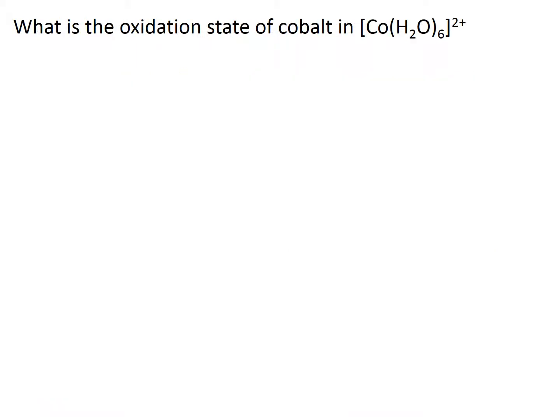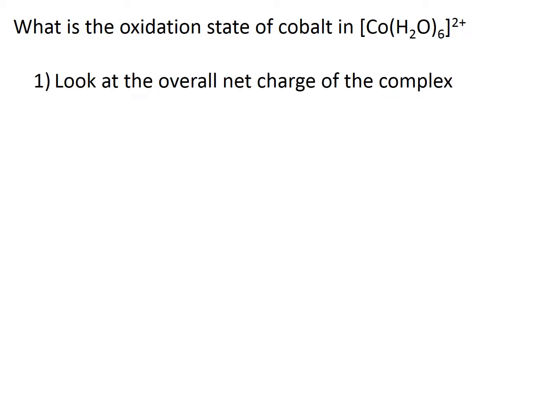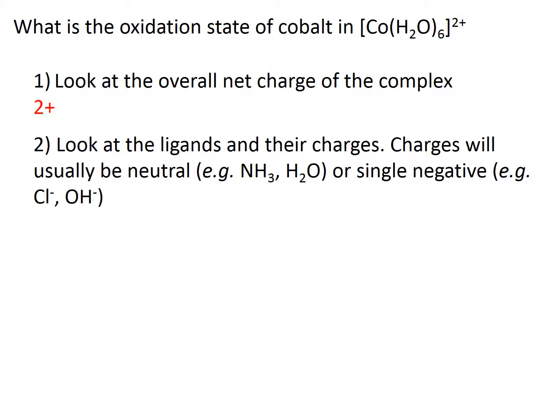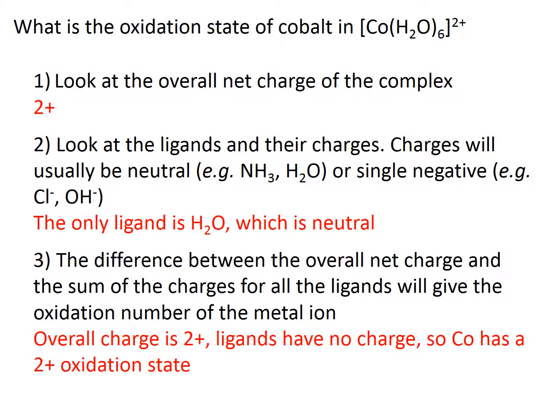Let's look at a few examples. Let's work out the oxidation state of cobalt in this complex. Firstly, we want to know the overall net charge of the complex — the superscript tells us that the overall charge is 2+. Secondly, we need to look at the ligands and their charges. There is only one ligand in this complex, which is water. Water is a neutral ligand, so the overall ligand charge is 0. Thirdly, we take the overall charge of 2+ and subtract the ligand charge of 0, which gives us a charge on cobalt of 2+. This tells us that cobalt is in the 2+ oxidation state.